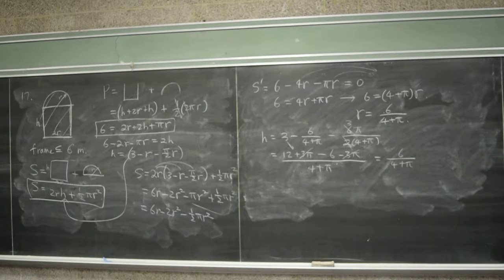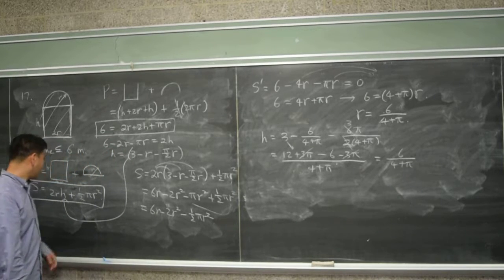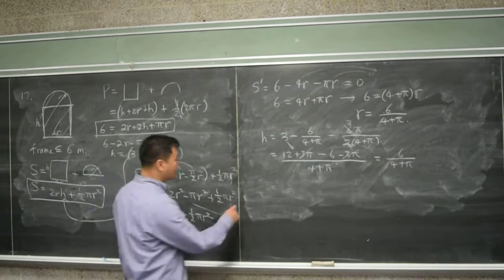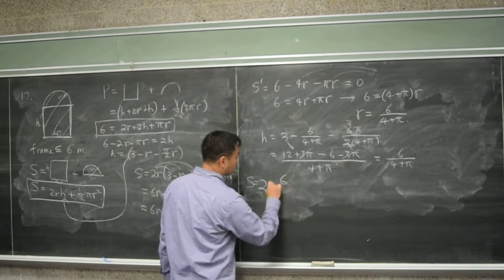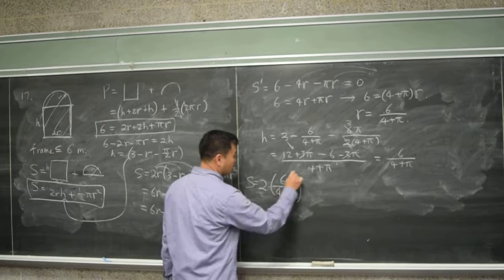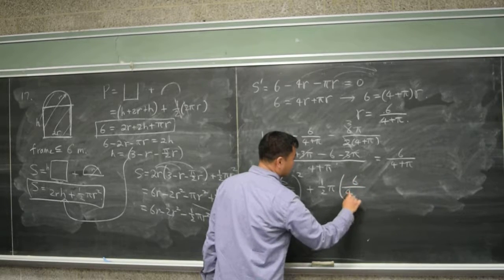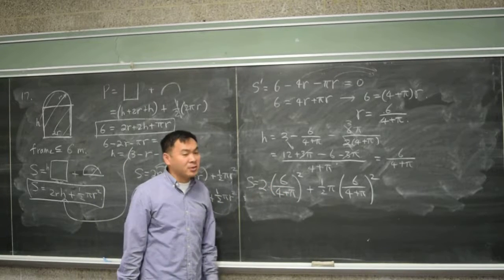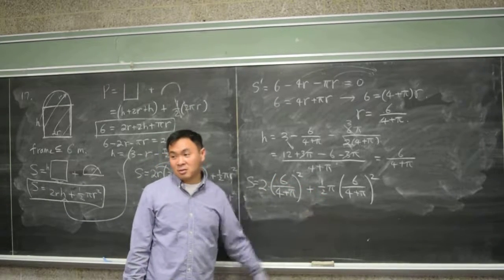Interesting. So both of them, both h and R equals to six over four plus pi. And plugging these numbers, plugging them into S, you get two times six over four plus pi squared. And then plus one half pi, six over four plus pi squared. You can simplify further, but I guess for this to be practical, you should use a calculator to find the approximate value.